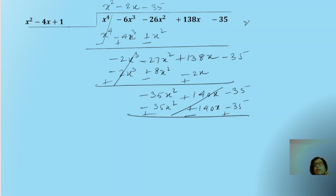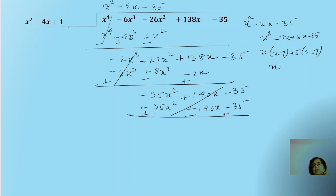We take the quotient x² − 2x − 35 and find two more zeros using middle-term factorization. This becomes x² − 7x + 5x − 35, which factors as x(x − 7) + 5(x − 7). So (x − 7) is one factor and (x + 5) is the other. Setting each factor to zero, we get the two remaining zeros as x = 7 and x = −5. So we obtain all four zeros with the help of this division algorithm.